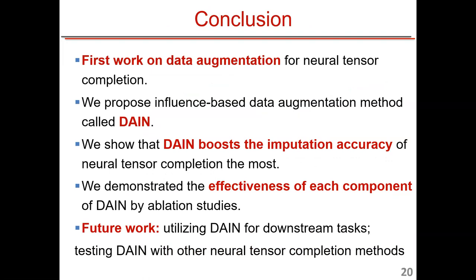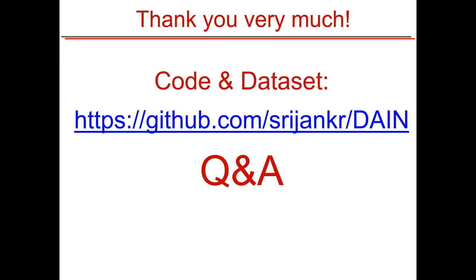Our work is the first data augmentation approach for the neural tensor completion area. We propose an influence-based data augmentation technique, and our method outperforms all existing baselines. We also prove the effectiveness of our design choices for all major steps through ablation studies. For future work, we plan to apply our framework to downstream tasks like recommendation and test it with more complex neural architectures. The code and datasets are available at the provided link.